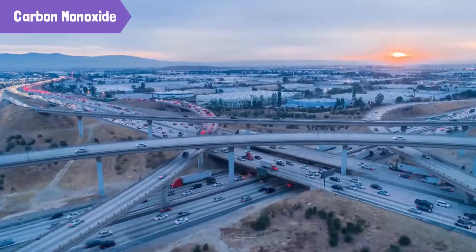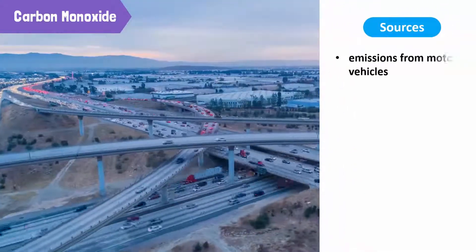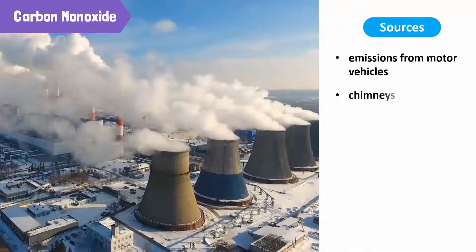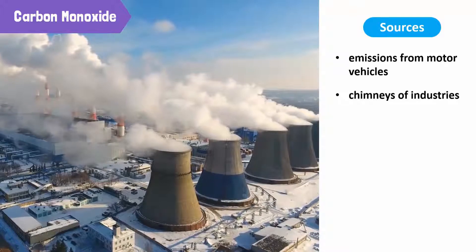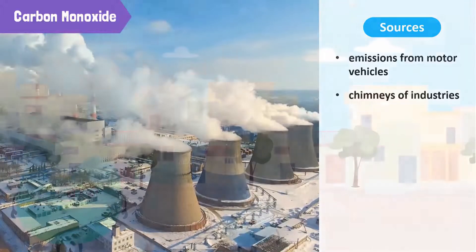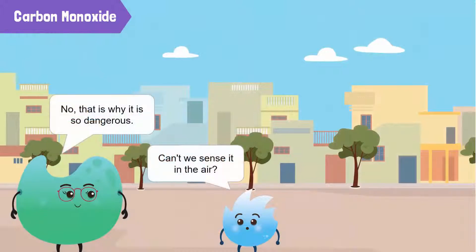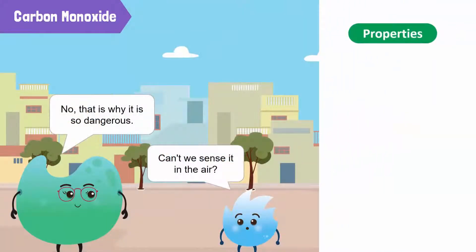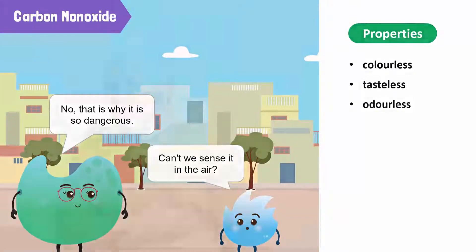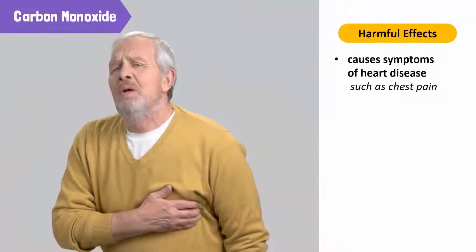Just like sulfur dioxide, carbon monoxide also comes from the emissions of motor vehicles. The chimneys of industries also emit this gas. Can't we sense it in the air? No, that is why it's so dangerous — it's a colorless, tasteless, and odorless gas. Carbon monoxide causes symptoms of heart disease such as chest pain.